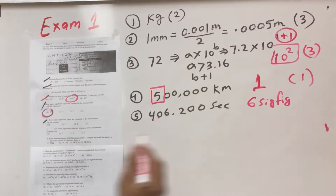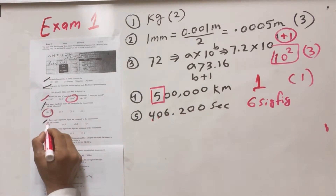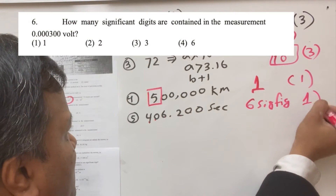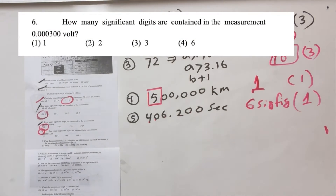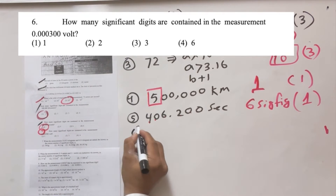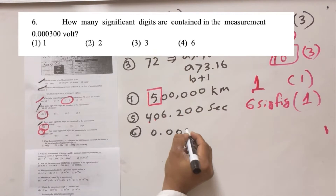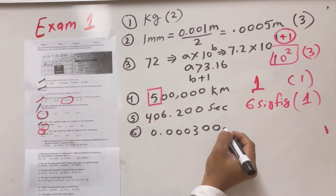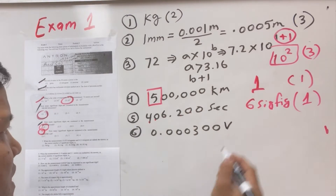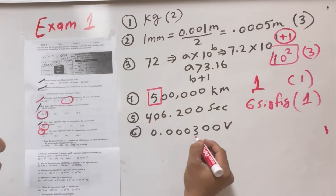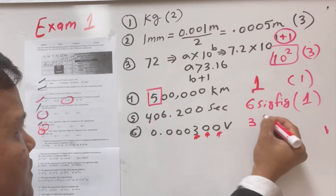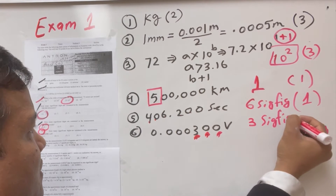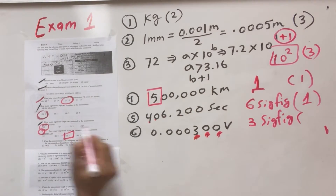Number six: count the significant figures — one, two, three. That's three significant figures, and that would be option number three.